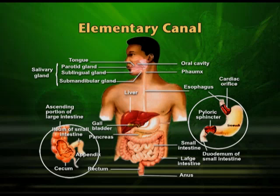After the jejunum begins the ileum — a very long and highly coiled part of the small intestine. The small intestine is followed by the large intestine, also known as the colon. As you can see in the diagram, there is ascending colon, descending colon, and transverse colon. The colon continues as the rectum, which opens to the anus. The point where the ileum joins the large intestine is called the cecum. The cecum harbors useful bacteria. At this same point is the appendix, which is a vestigial organ for us but has evolutionary significance.